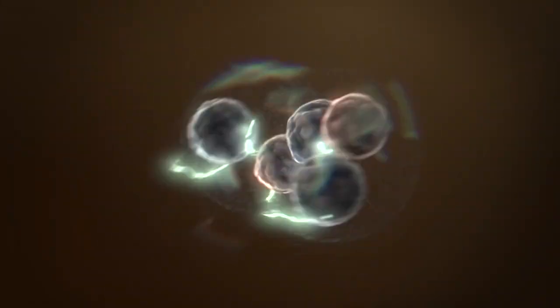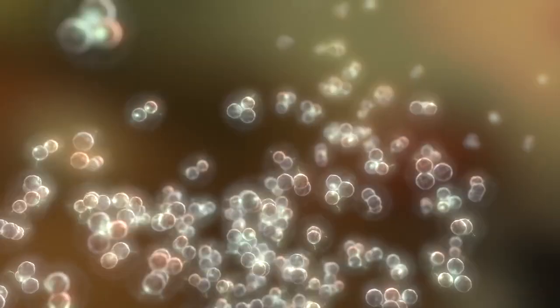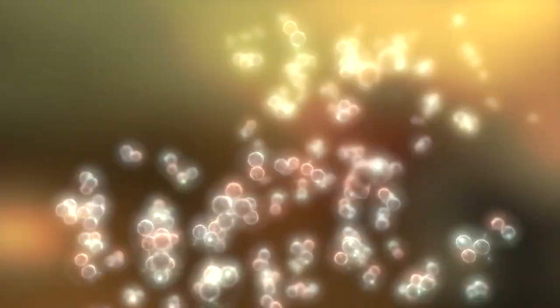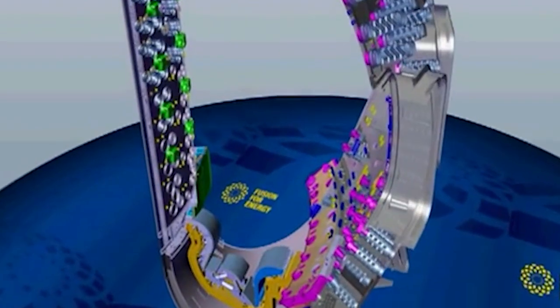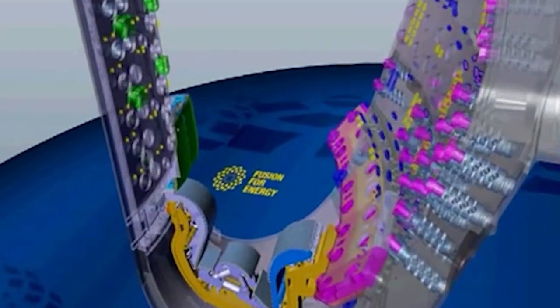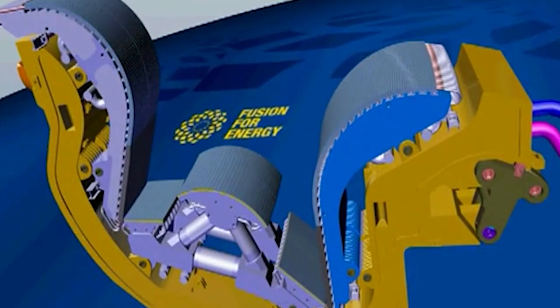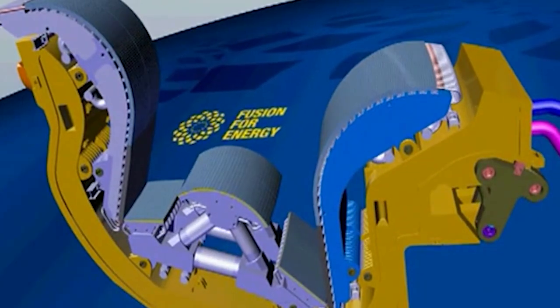But soon, what's left over from the process will be helium ash along with other impurities. The solution? There's a diverter at the bottom of each vacuum vessel sector that will store the impurities before they get extricated. Each of these diverters will be covered with tungsten, a metal with the highest melting point.